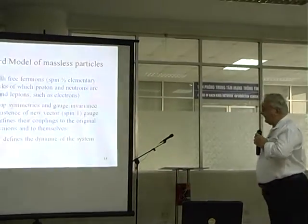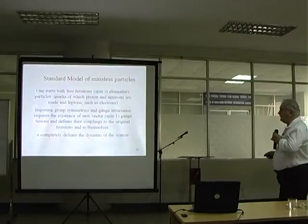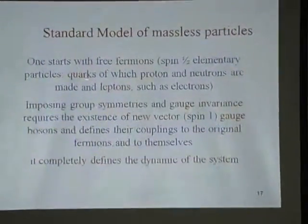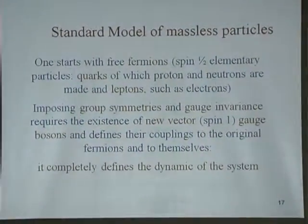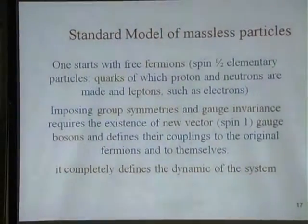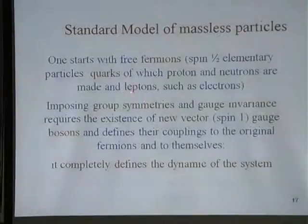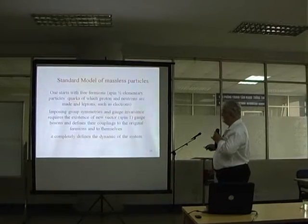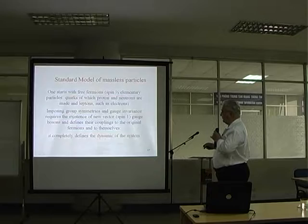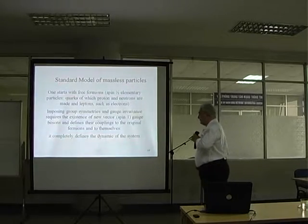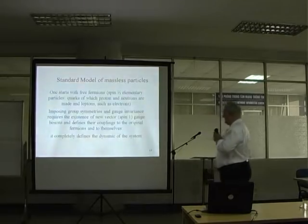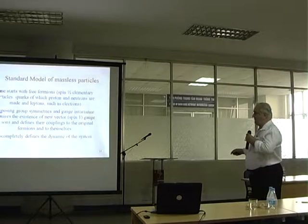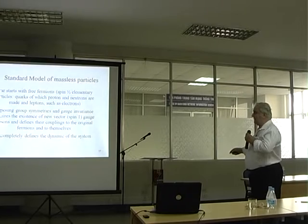What is the standard model of massless particles? You start with three families of fermions — spin-1/2 particles. Essentially there are quarks, of which protons and neutrons are made, and leptons, the most famous being the electron. The neutrino is a partner of the electron. You then impose certain group symmetries and also gauge invariance.